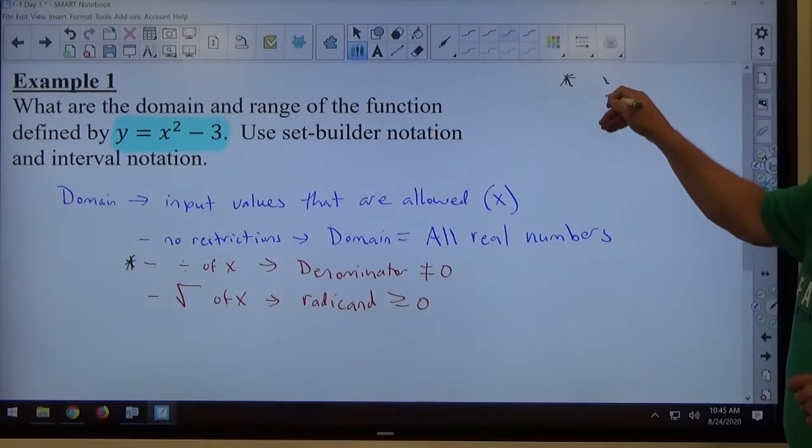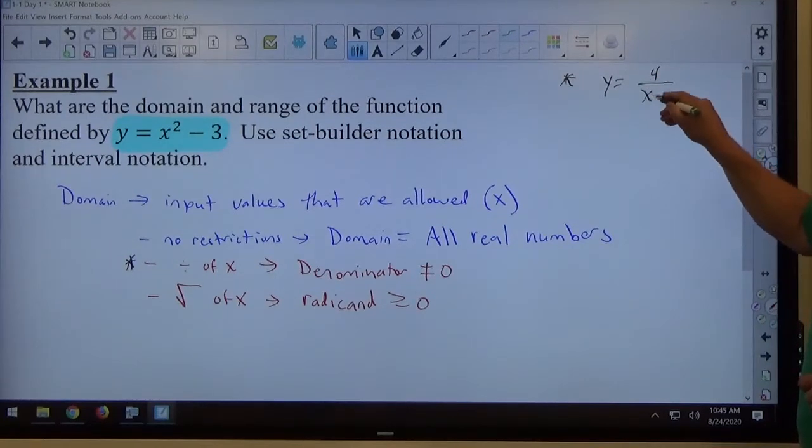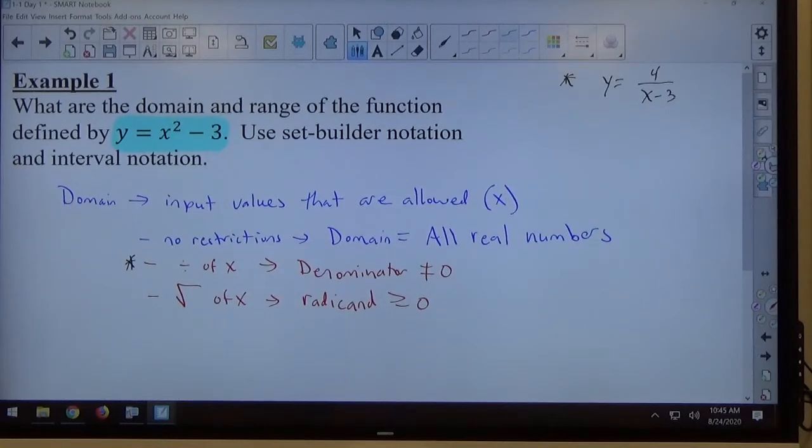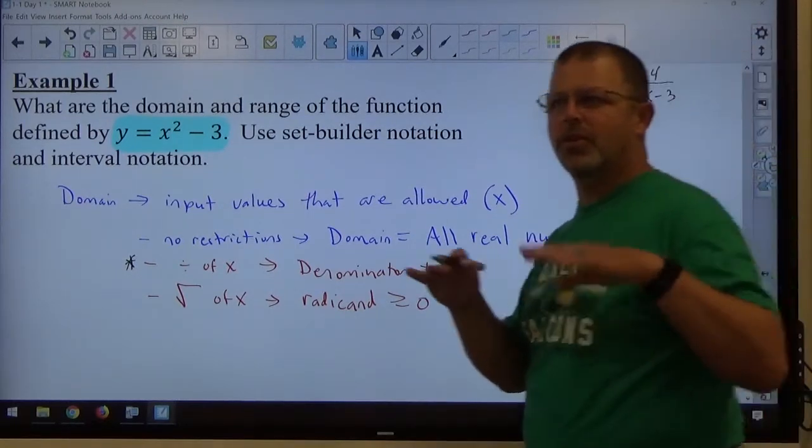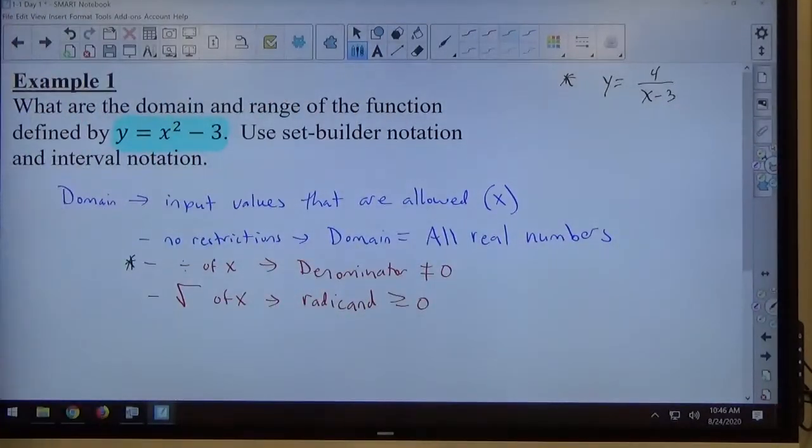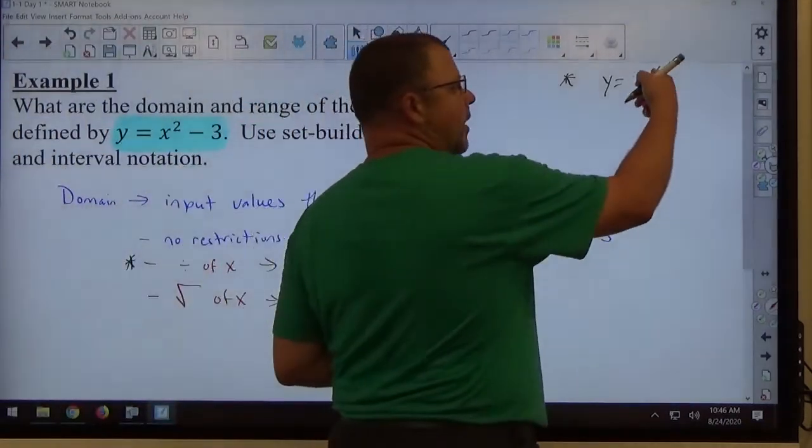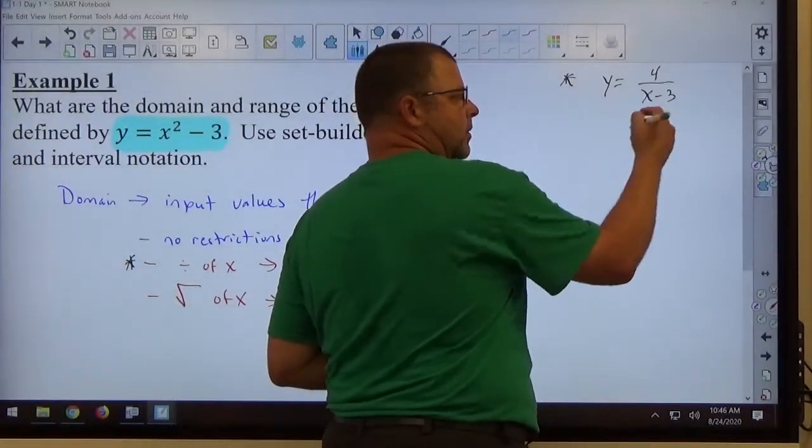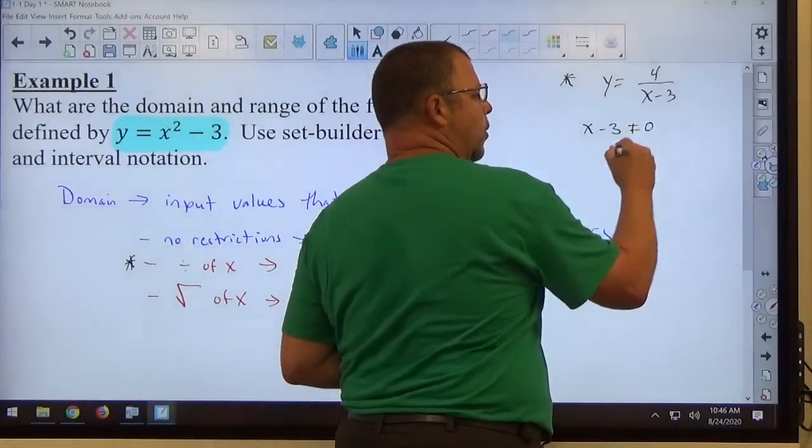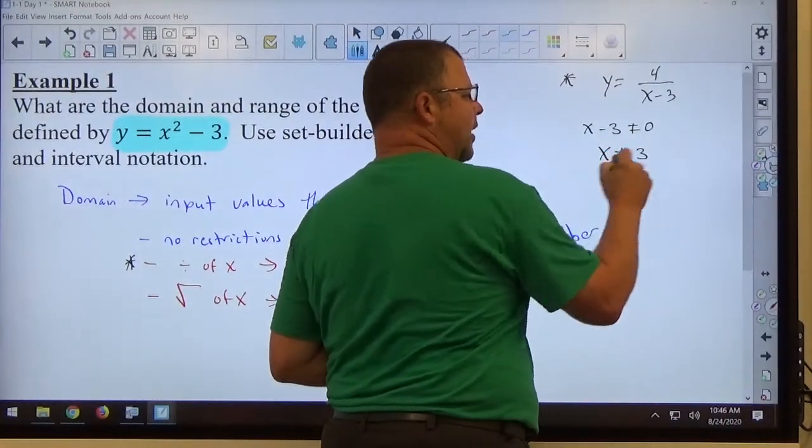If I have y equals 4 over x minus 3, what value of x makes the bottom equal to zero? What minus 3 equals zero? Three, right? So this case, there's division by x. x minus 3 is not allowed to equal zero, which means x is not allowed to equal three. That's the domain of that one.